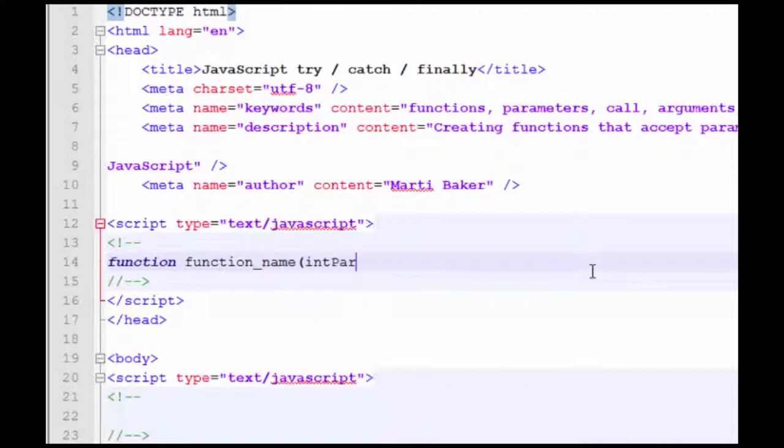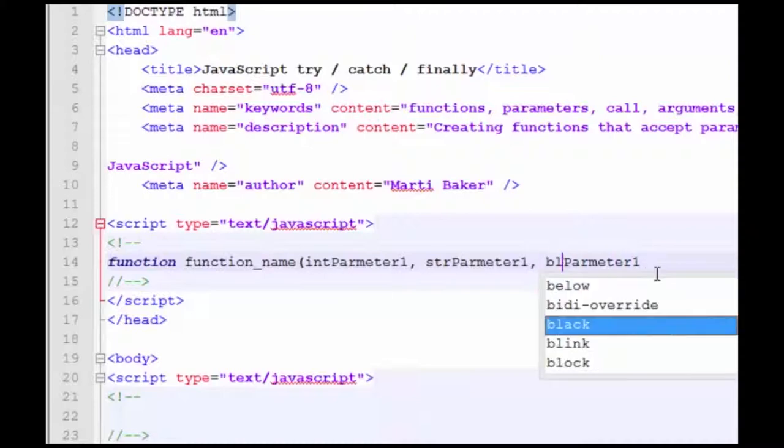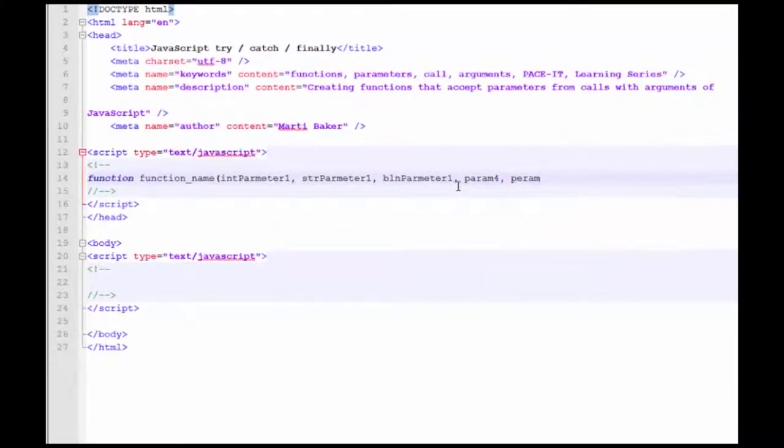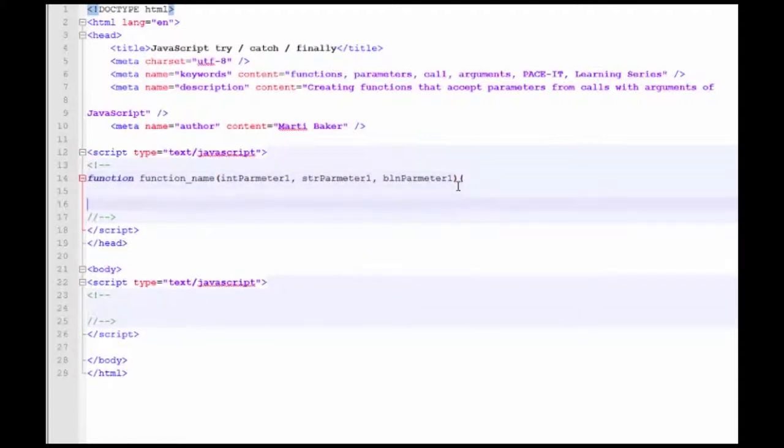And then we're going to declare parameters. The first parameter is going to be an integer, and they're separated with commas. The second one will be a string, and the third one, we're going to have it be a boolean. You can have as many parameters as you want. We could do param4, param5, param6, each one a little bit differently named and all separated with a comma. For right now in our syntax, let's just look at three.